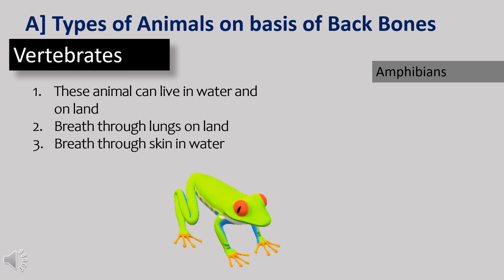Amphibians are animals that can live both in water and on land. They can breathe through lungs when they are on land and through their moist skin when they are in water.